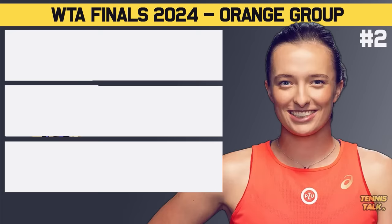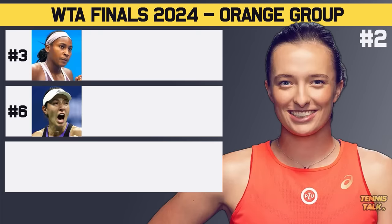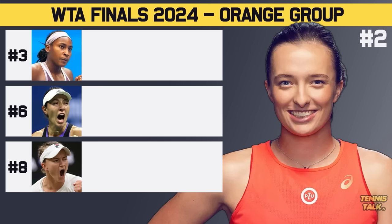Orange group. We've got Swiatek, Gauff, Haddad Maia, and Krejčíková. This could be the more even of the groups because we just don't know what Swiatek's going to look like — we haven't seen her for so long. And Krejčíková, we don't even know if she's going to play. If she does play, she could roll heads.